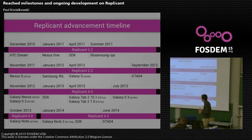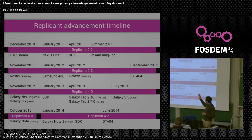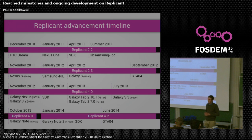That's a rough timeline of what happened. It started in December 2010 with the HTC Dream. Then Google was kind enough to send us a Nexus One when it came out, so we added support for that on Replicant 2.2. I joined in April 2011, worked on the SDK a bit, then went on to work on LibSamsung IPC — basically the library that talks to the modem on the Nexus S at the time, but it's the same protocol on most Samsung devices. It started with the Nexus S but was extended for other devices.